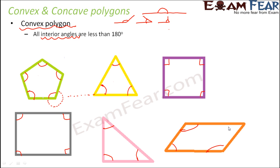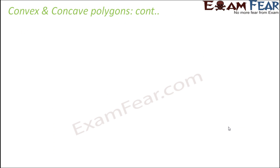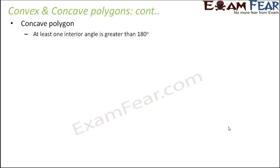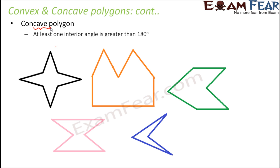Now that we have discussed convex polygons, let's talk about concave polygons. The word concave already has the term 'cave' in it. When you look at these concave polygons, they give you a cave-like structure. In a concave polygon, at least one interior angle is greater than 180 degrees. As long as all interior angles are less than 180 degrees they remain convex, but the moment any one angle exceeds 180 degrees, it becomes concave.